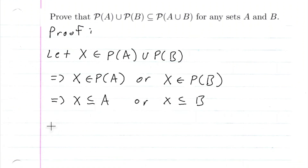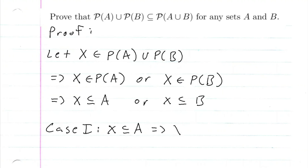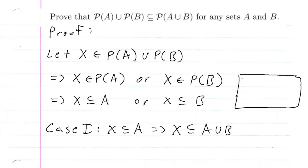So let's go ahead and go on to case one: X is a subset of A. If X is a subset of A, this implies that X is a subset of A union B. Let me go ahead and draw a picture here. I have my universal set, set A and set B. So if X is a subset of A, then of course X is a subset of A union B.